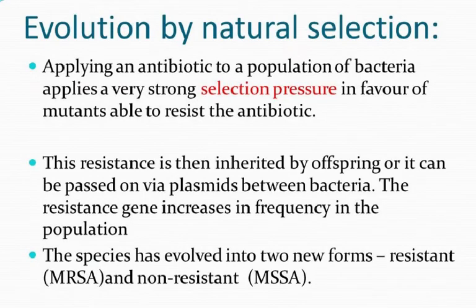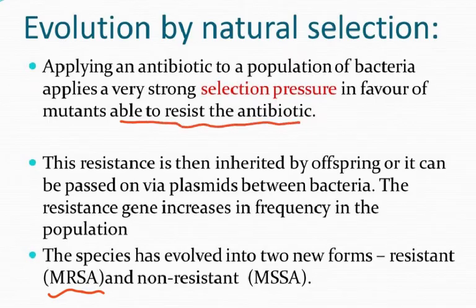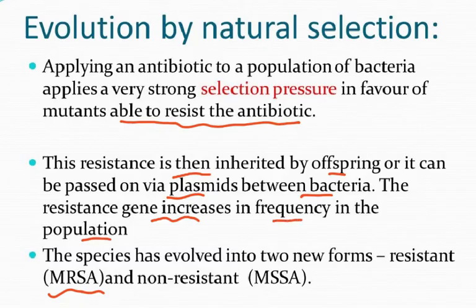A specific example of natural selection on the syllabus is MRSA. When you apply an antibiotic to a population of bacteria, it applies a very strong selection pressure in favor of mutants able to resist the antibiotic. Out of a million bacteria, some survive because they contain genetic information making them resistant to that antibiotic — remember, antibiotics kill bacteria. This resistance is then inherited by offspring or passed on through plasmids between bacteria, so the resistant gene increases in frequency in the population. The species has evolved into two new forms: the resistant MRSA and the non-resistant MSSA.